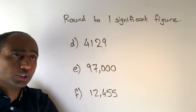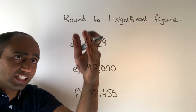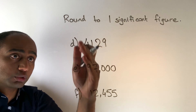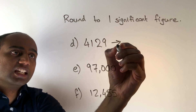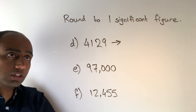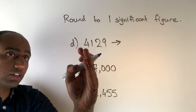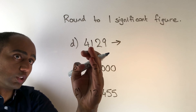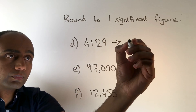For 4,129, the biggest place value column is the thousands column, so we want to round this to the nearest thousand. To the nearest thousand this is 4,000. The next digit along is only a one, so we round down.